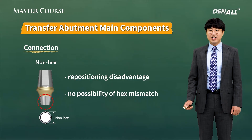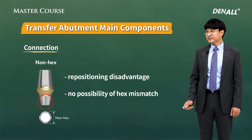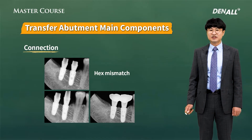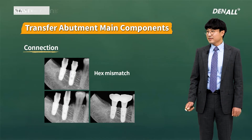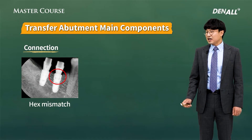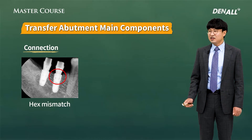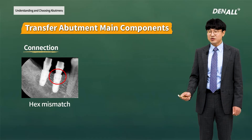The disadvantage of the non-hex is that it cannot be repositioned as there is no hex structure, but it has many advantages. The biggest problem in using the hex abutment is that hex mismatch can occur, which is an incorrect connection. A clinician can easily make a mistake, as the screw can still be tightened even with the mismatch. If you see a connection gap on the x-ray, there is a lot of space below the screw. If you get skilled in reading the x-ray, you will detect the hex mismatch easily.